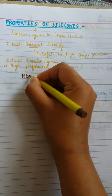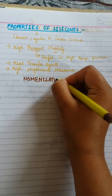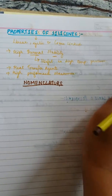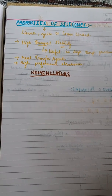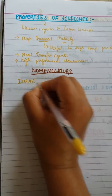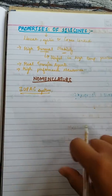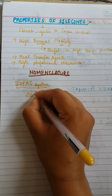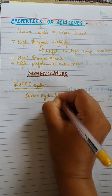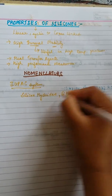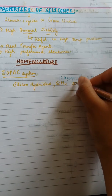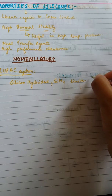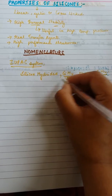Now let's move to nomenclature — the naming of silicones. In chemistry we prefer IUPAC naming. Silicones generally exist in the form of silicon hydrides. Just as in organic chemistry methane (CH4) is a carbon hydride, similarly in silicones there are silicon hydrides with the formula SiH4, which is completely similar to methane CH4. So just as we name CH4 as methane, we name SiH4 as silane.